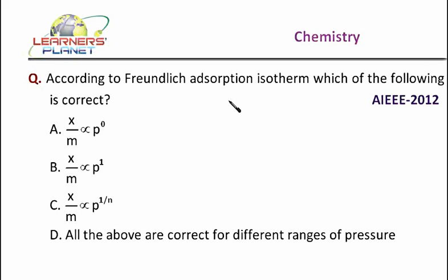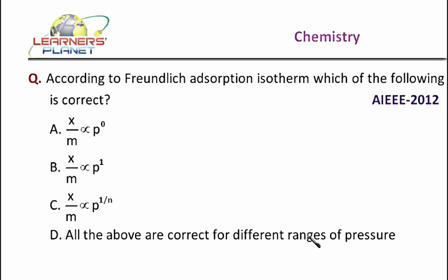According to the Freundlich adsorption isotherm, which of the following is correct? Option A: x by m is proportional to p to the power 0. Option B: x by m is proportional to p to the power 1. Option C: x by m is proportional to p to the power 1 by n. Option D: all the above are correct for different ranges of pressure.